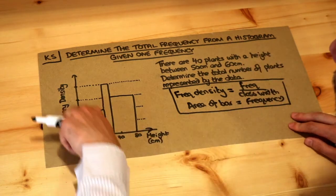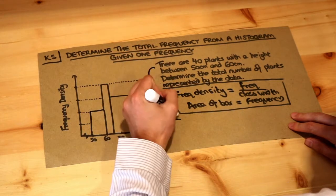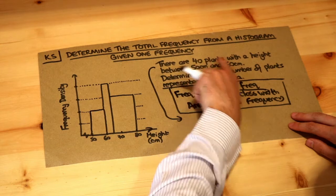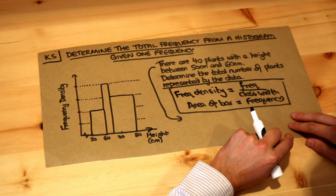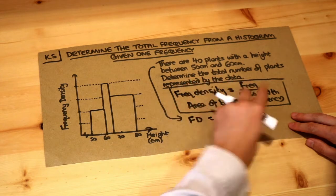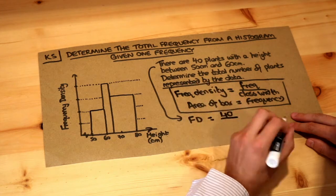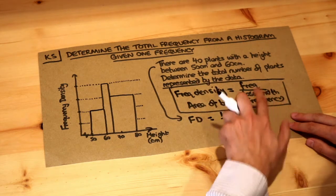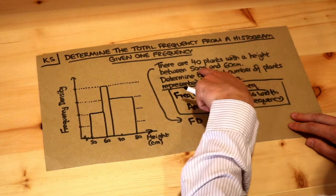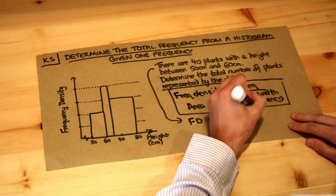So the problem is we don't know what this frequency density axis is, but we can use this information at the top here to work out what the scale is. There's 40 plants with a height between 50 and 60 centimetres, so the frequency density, or FD for short, is the frequency - well there's 40 plants, that's a frequency of 40 - divided by the class width. The class width is the width of the interval. Now we've got plants between 50 and 60 centimetres, that's a width of 10, so we do 40 divided by 10, which is 4.